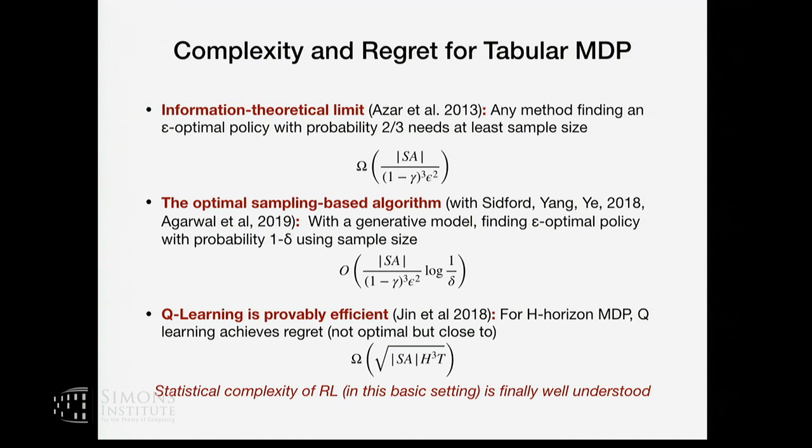In terms of regret, there has been a lot of work for RL. We showed that for an H-horizon MDP, by doing a variant of Q-learning, one can achieve a certain regret bound. Although this is not optimal — we believe the optimal should be just linear in H — that's something no one has been able to achieve yet. So it remains quite open.